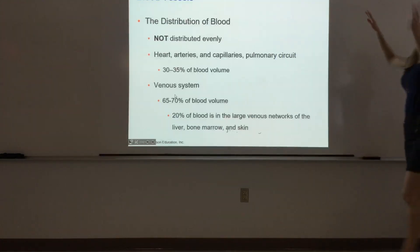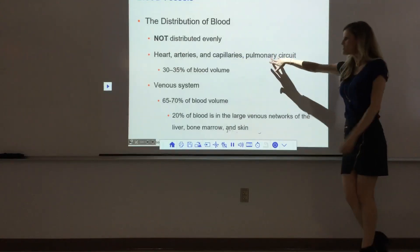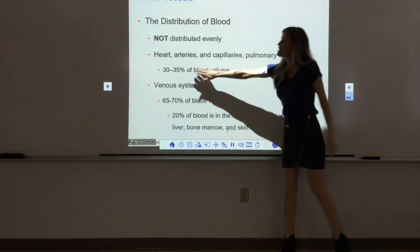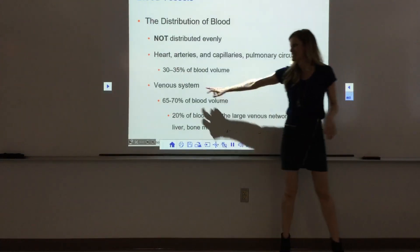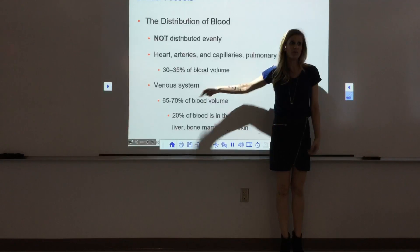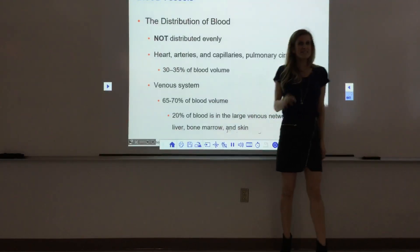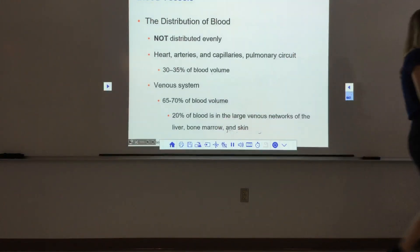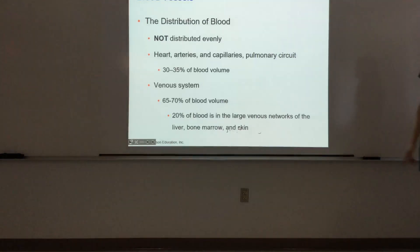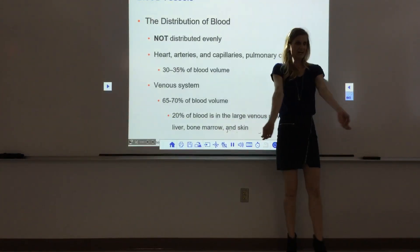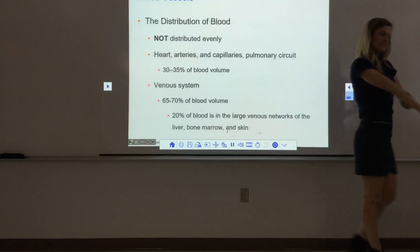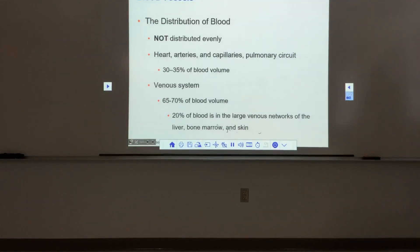The heart, arteries, capillaries, and all pulmonary vessels combined account for only about 30 to 35% of the blood. About two-thirds is sitting in the venous system. Just over 20% of blood is in particularly bloody organs — we see large venous networks in the liver, bone marrow, and skin, or just under the skin in the deep dermis. These large venous networks hold over 20% of the blood.